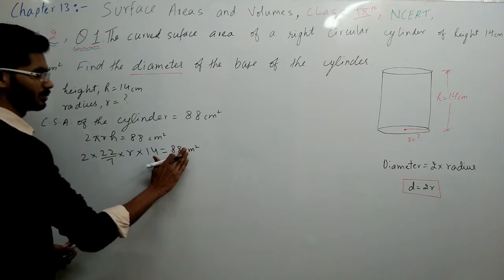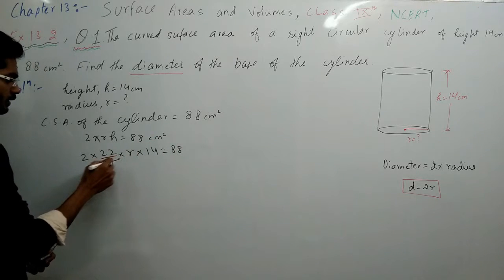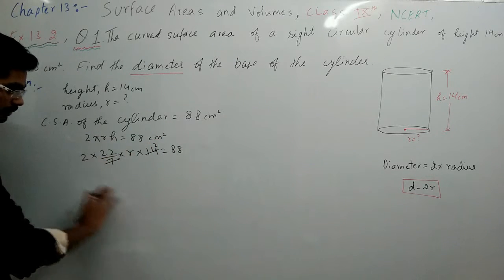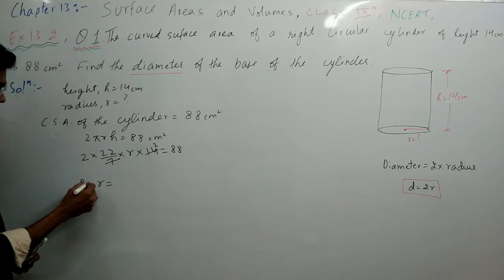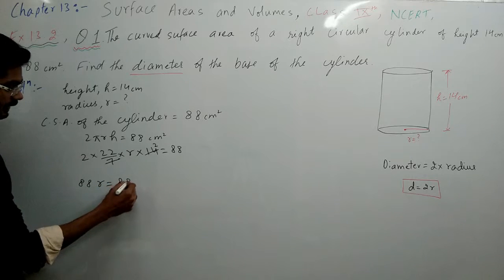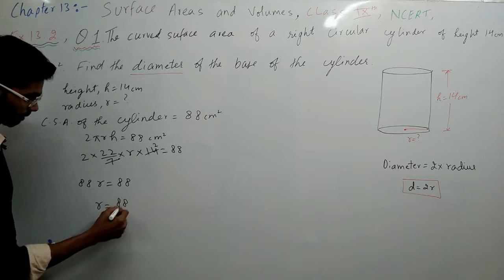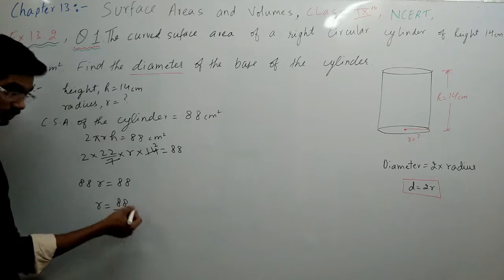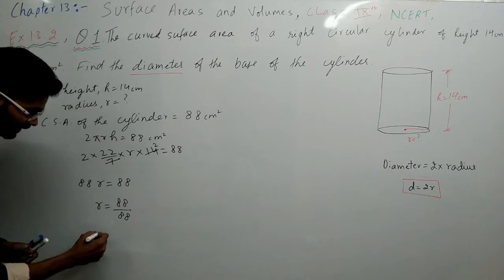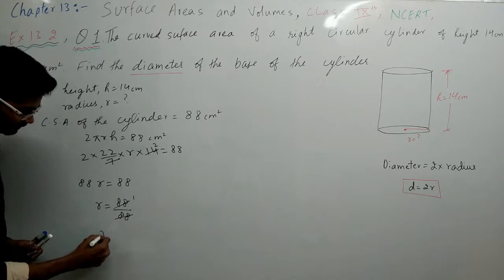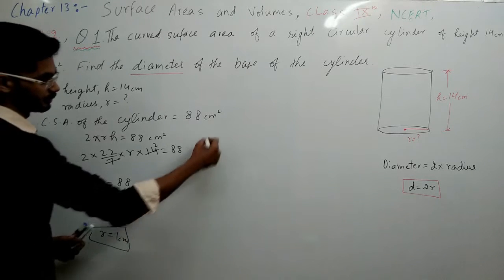Ab dekhiye, isko cancel out karenge. Isko udhar le kar jayenge to cancel jayega. Ab 88 ko 88 divide karenge to kya hoga. Kuch bachche zero likh dete lekin zero nahi aayega and this is 1 centimeter.